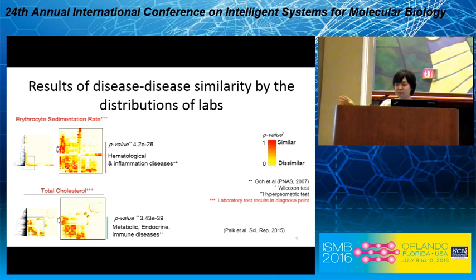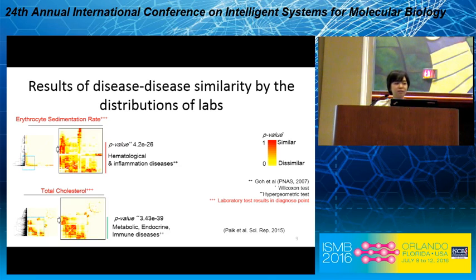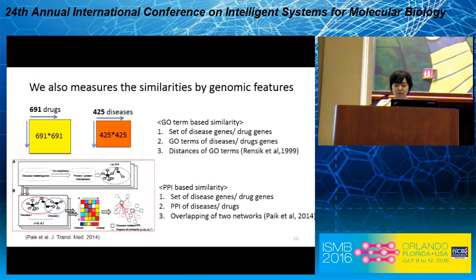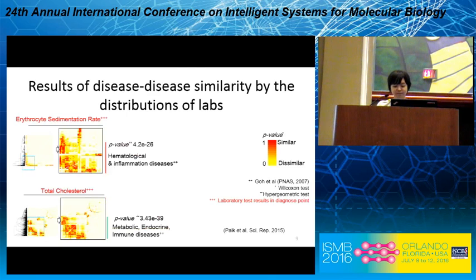We also cluster the same set of diseases in the upper side. The lower heat map is a cluster result for the same diseases based on total cholesterol level, showing a different cluster. The clustered diseases are endocrine, metabolic, and immune diseases, like diabetes. We can say that while the selected disease-associated lab in the cleaning might be a little noisy, the overall distributions can represent the similarity of disease.